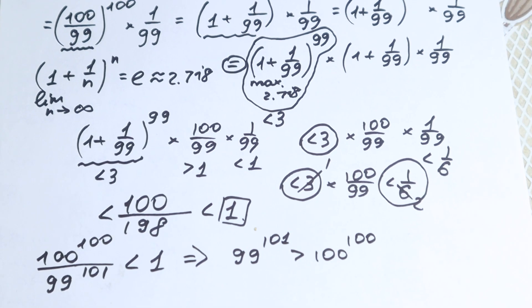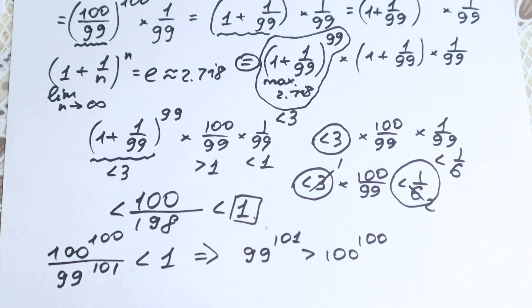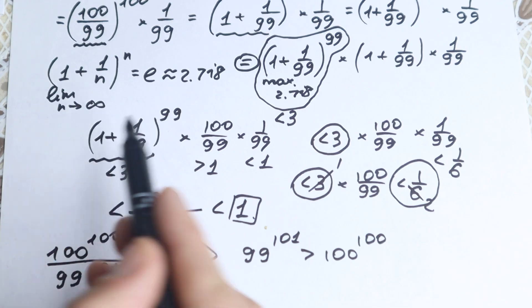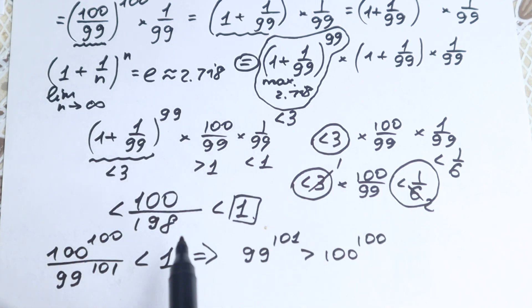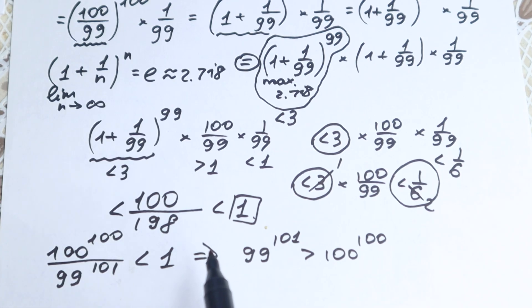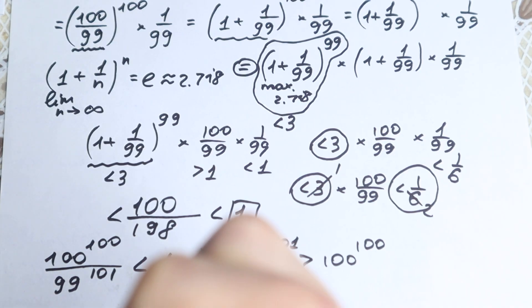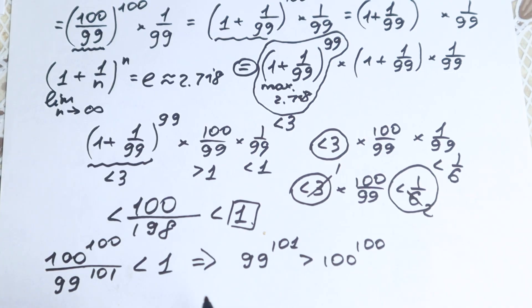Since the fraction is less than 1, the denominator is greater than the numerator, so 99 to the power 101 is greater than 100 to the power 100. I know this approach is a tricky one — it requires some knowledge of limits and works with inequalities, which is not a common solution. Maybe you have another solution — it would be interesting to read about it! Thank you so much for watching, I try to help everyone with math. See you in the next videos — I wish you all the best in your mathematical adventure!